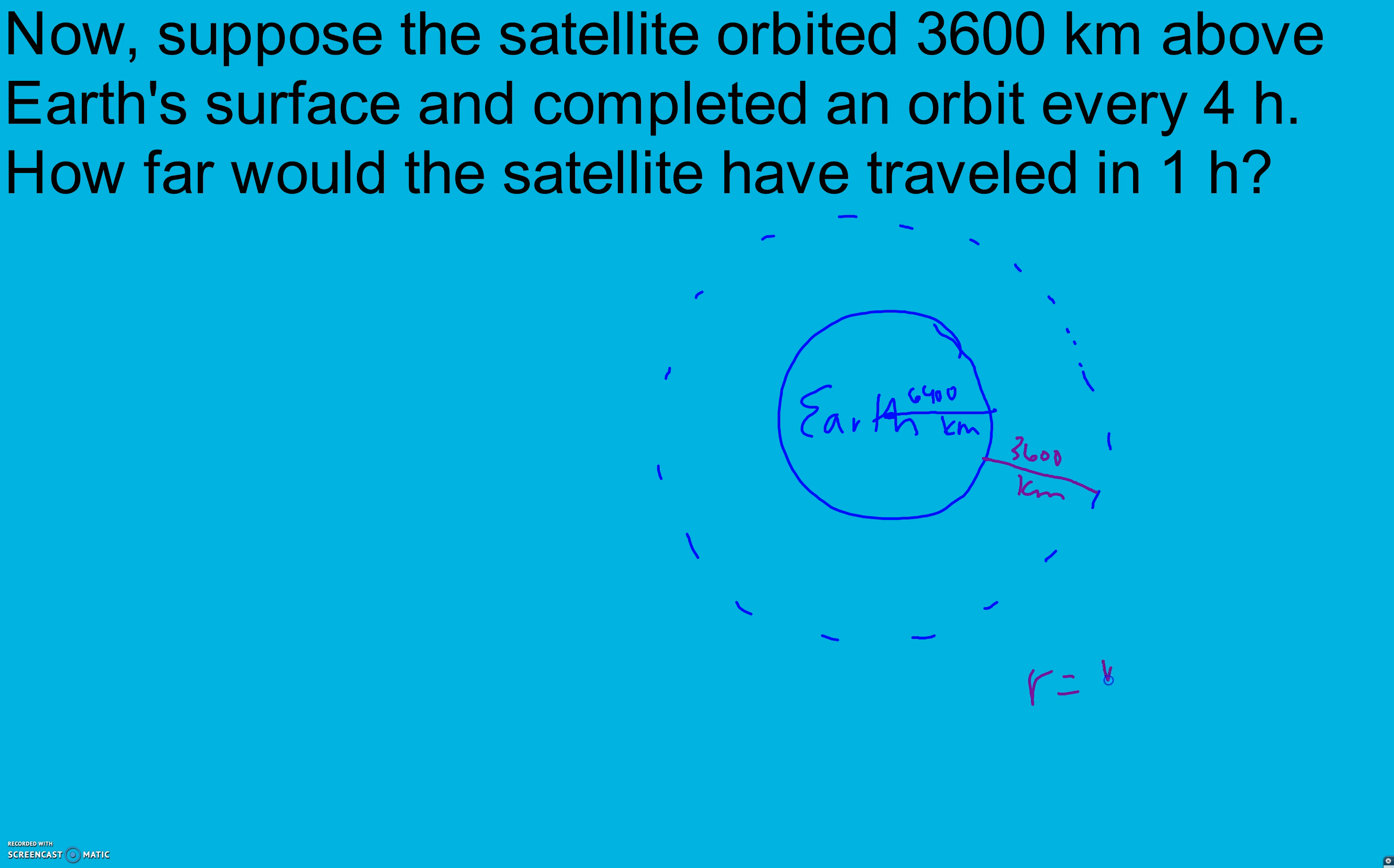To find our total radius, we take the radius of the Earth and the radius of the satellite. So we take 6,400 plus 3,600, and our radius is going to be 10,000 kilometers.